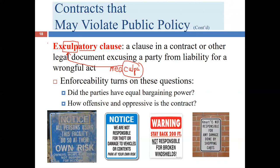An exculpatory clause in a contract excuses a party from liability even though they have committed a wrongful act. Examples include signs stating: 'All persons using this facility do so at their own risk — owners, management, and employees are not responsible for accidents'; 'Not responsible for theft or damage to vehicles or contents — park at your own risk'; and 'Stay back 200 feet — not responsible for broken windshields.' Generally these signs are not legally effective.